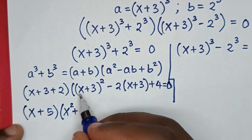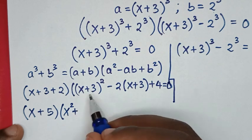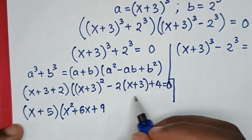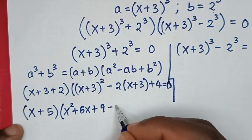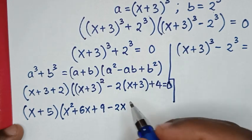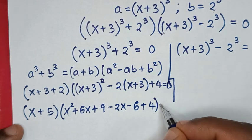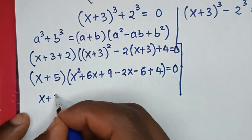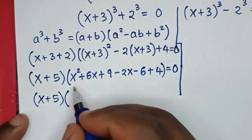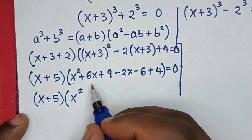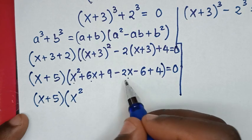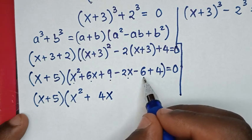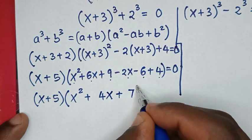Expanding (x + 3)^2 gives x^2 + 6x + 9. Opening the bracket with negative 2 gives -2x - 6, then plus 4. So combining: x^2 + 6x - 2x + 9 - 6 + 4 = x^2 + 4x + 7. Therefore we have (x + 5)(x^2 + 4x + 7) = 0.